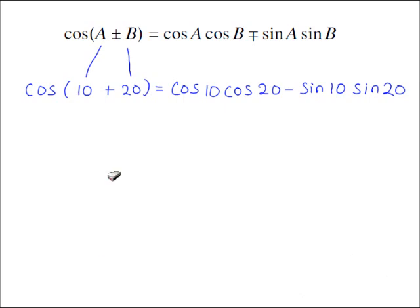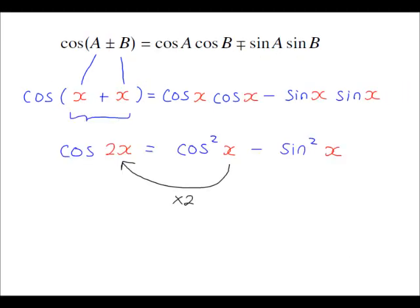If the angle had a minus instead of a plus, the signs switch accordingly. The compound angle formula for cos A plus or minus B is given in the OCR formula book. If we replace A and B with the same angle x, we end up with cos²x minus sin²x, which is a double angle formula: the angle x times 2 gives 2x.